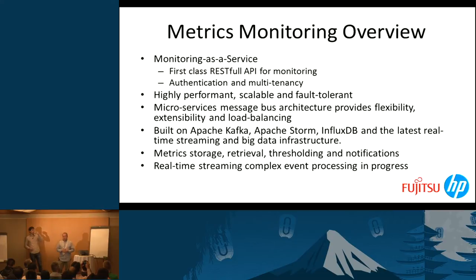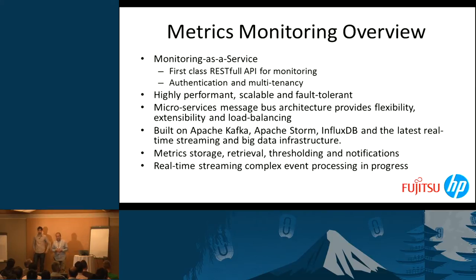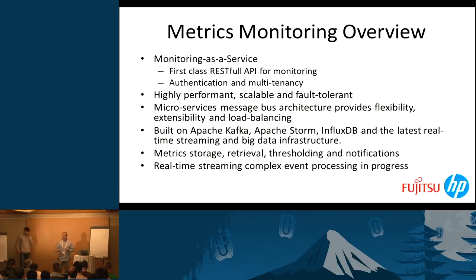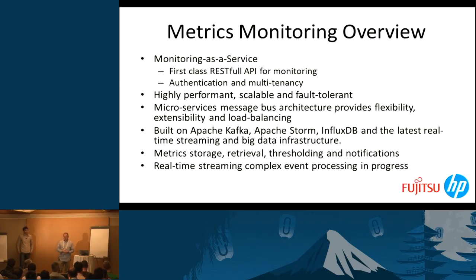Monasca is highly performant, scalable, and fault tolerant. It uses a microservices message bus-based architecture providing flexibility, extensibility, and load balancing. Microservices are relatively small, autonomous components that can be deployed separately and communicate over a network — in our case typically over the message bus based on Apache Kafka. These components can be deployed independently, and you can run Monasca with or without any of the components in the architecture diagram, or even add your own.